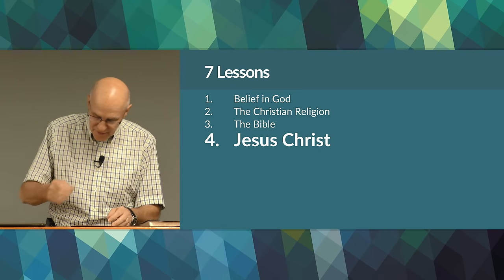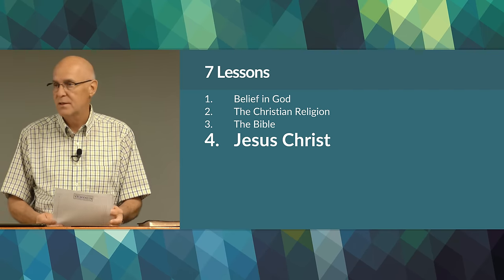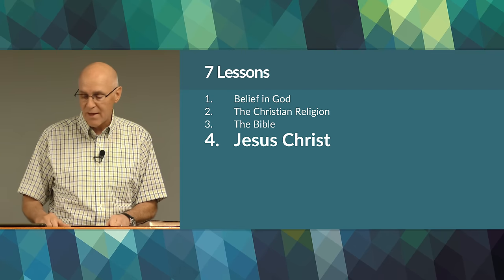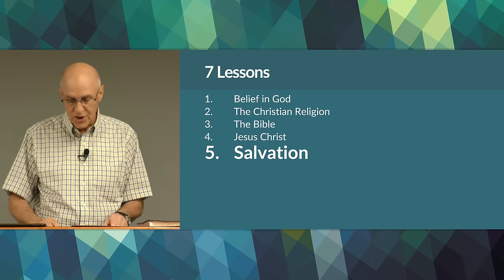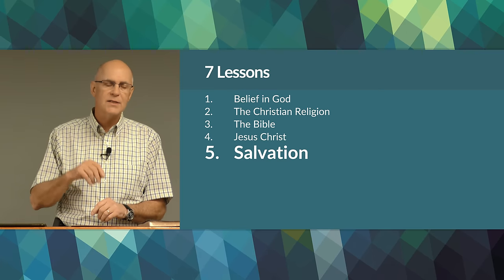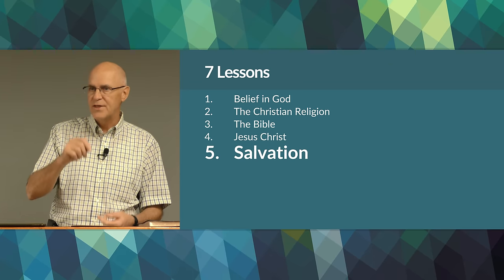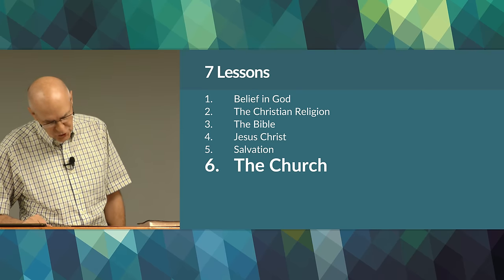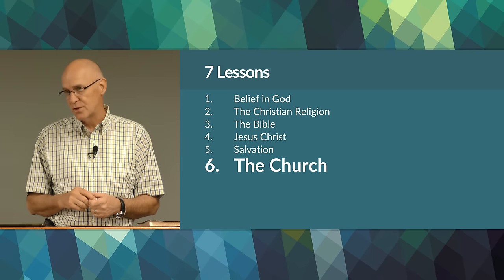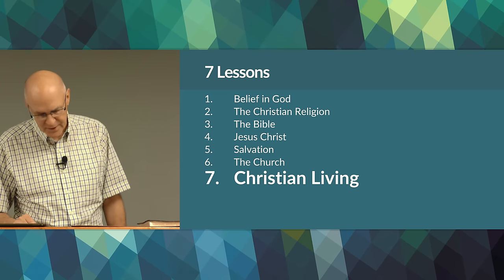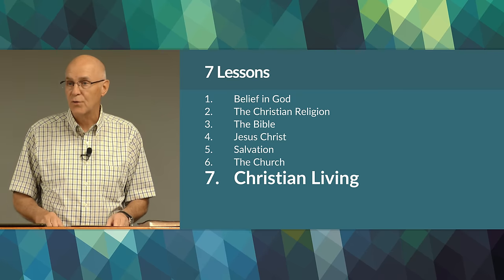Lesson four is Jesus Christ, focusing on the central figure of Christianity. Who is this person? Who does the Bible say He is? Number five is salvation — we'll review the main idea of the Christian religion, which is its solution to mankind's greatest problem: sin and the death that it causes. Number six is the church — we'll examine what Jesus and the Apostles say about the church. And lesson number seven is Christian living — our final lesson will describe what is the style and purpose of the Christian life.